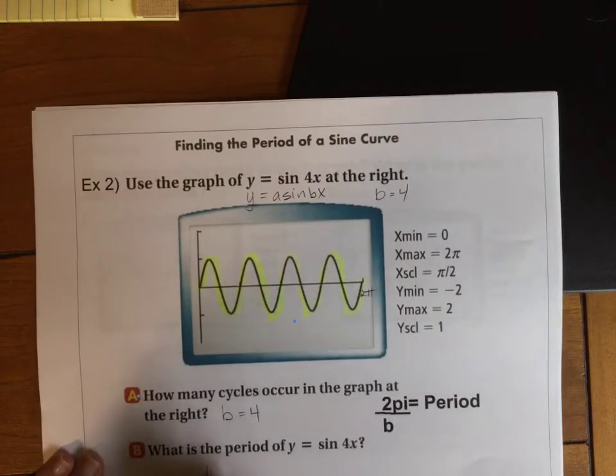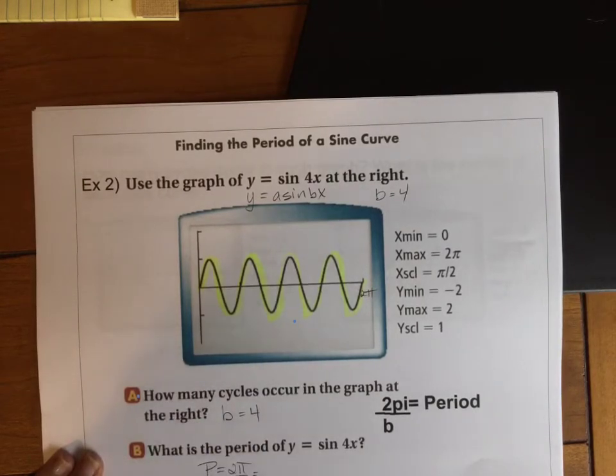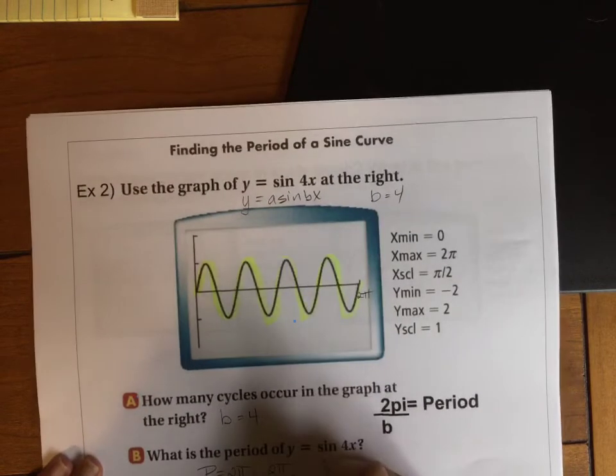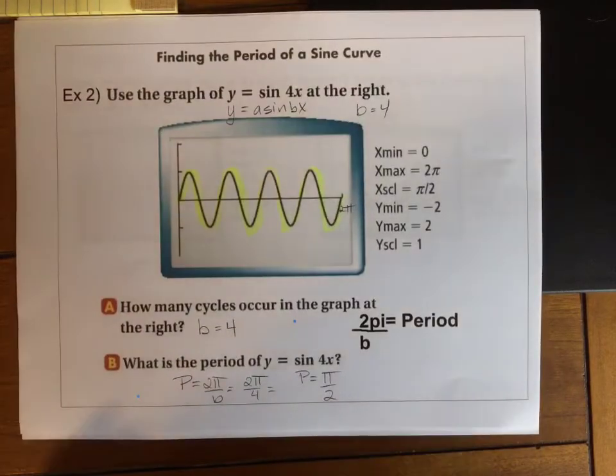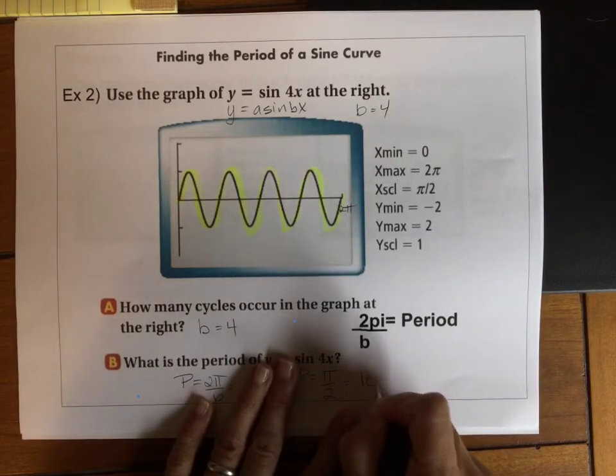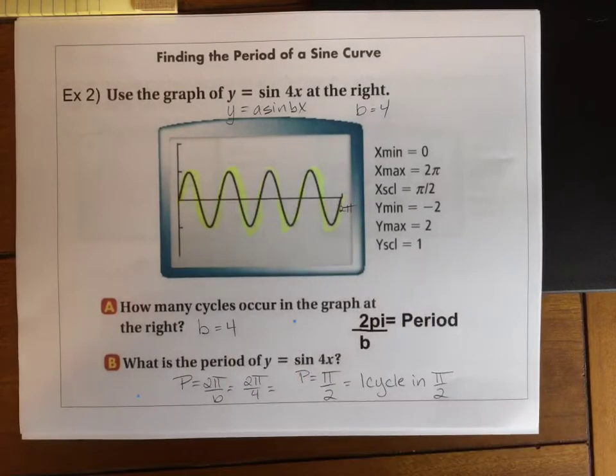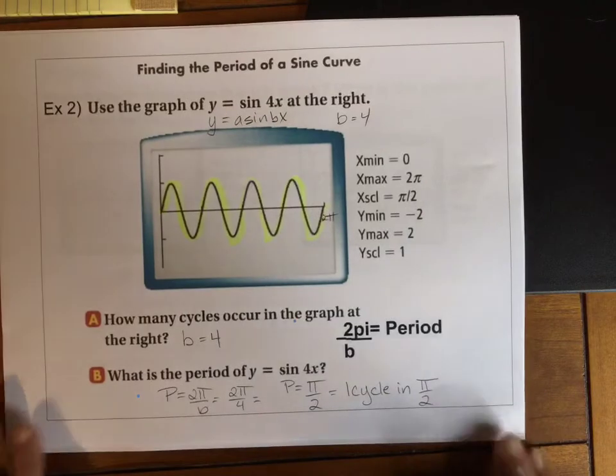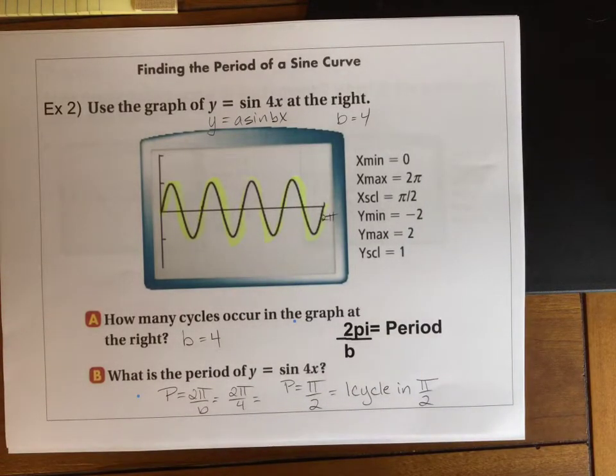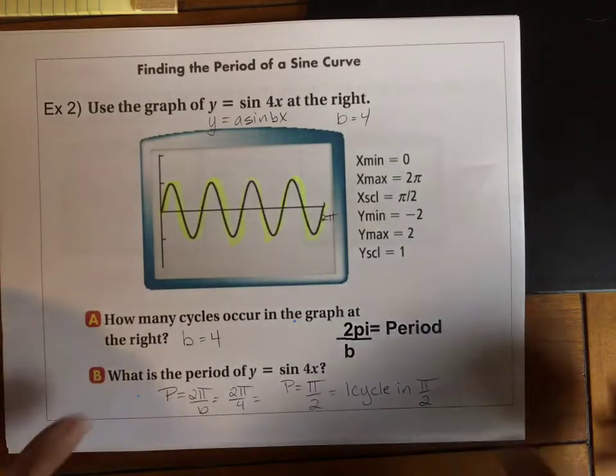And then what is the period of y equals sine 4x? Well, we had that equation on the previous page, 2π over B. So instead of putting B, I'm going to have 2π over 4. And so then our period simplifies to be π over 2. What does that mean? That means I complete one cycle in π over 2, because the definition of period is the time for one cycle.